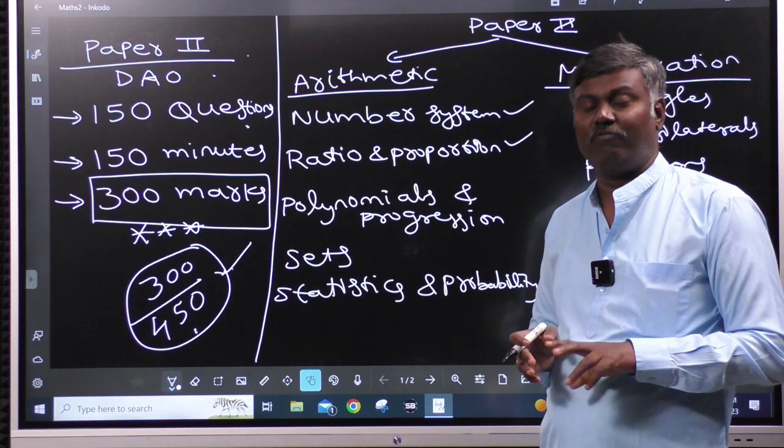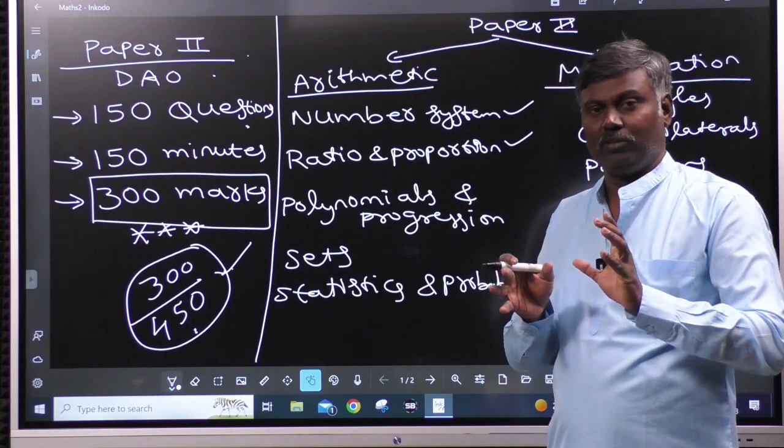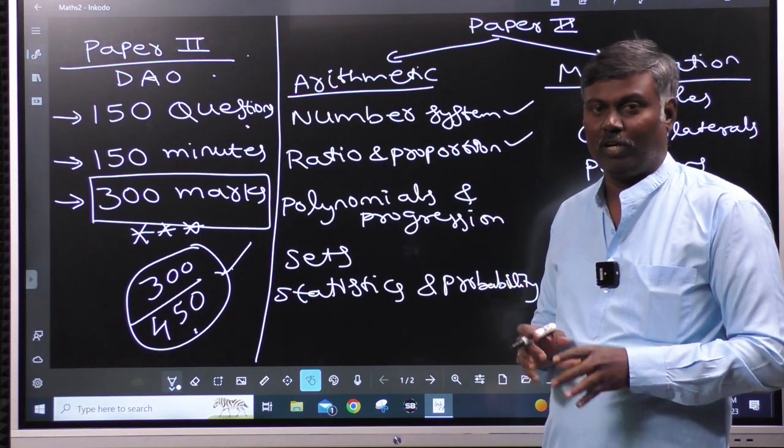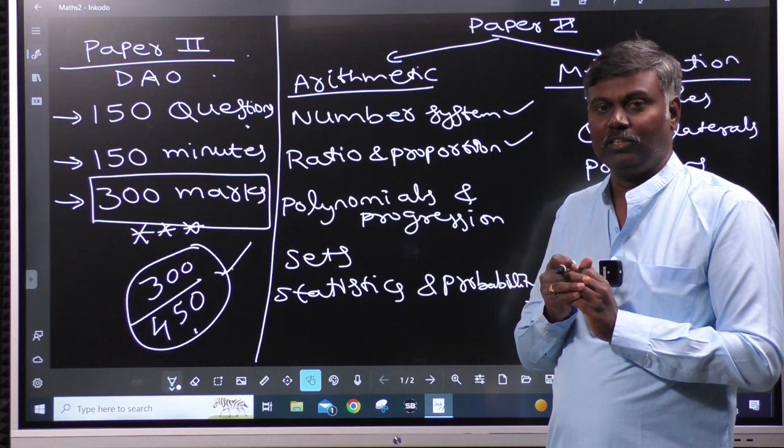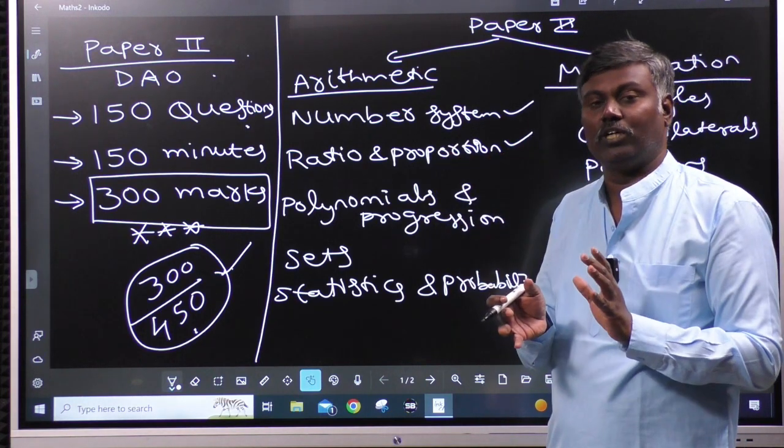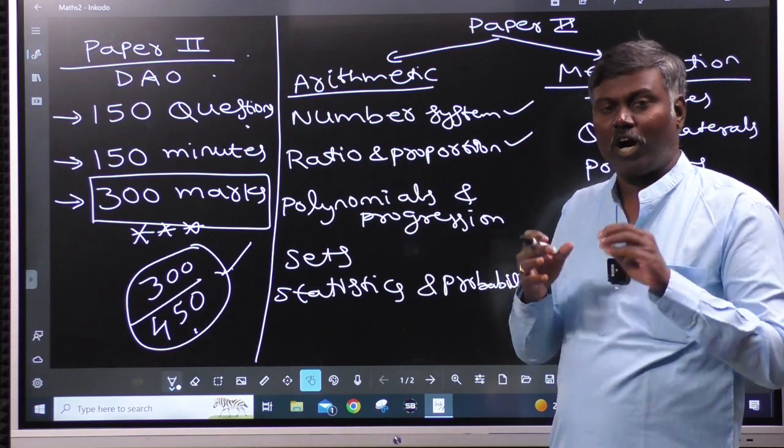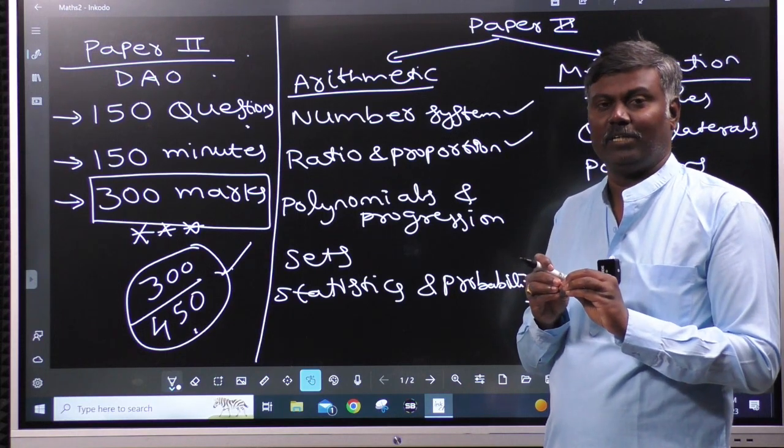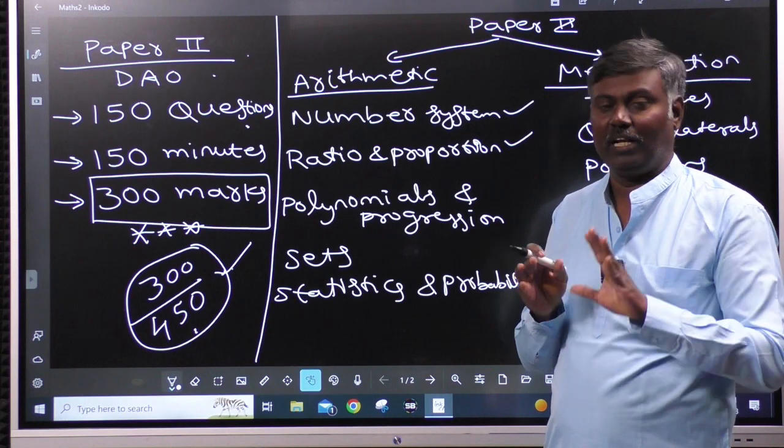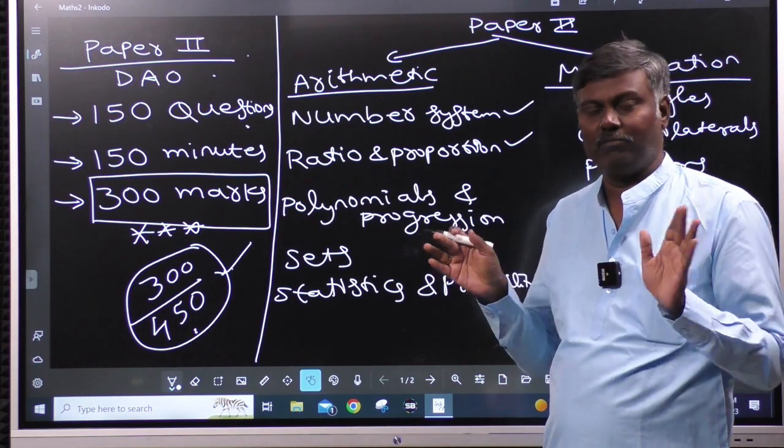That means percentages, profit and loss, simple interest, compound interest. The most important thing you have to observe is ratio proportion is an application. The ratio proportion is a basic, so you should use the ratio proportion. The formula is much better depending on the formula. We will discuss these problems in class.